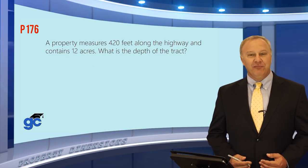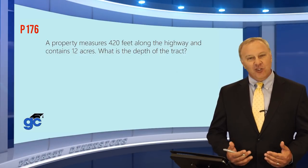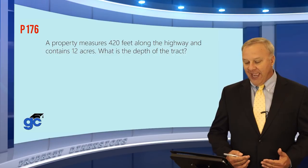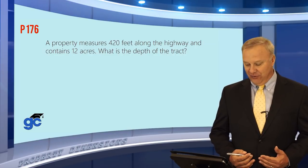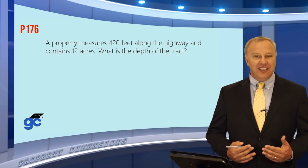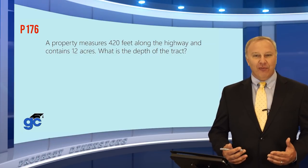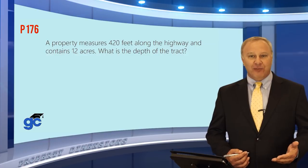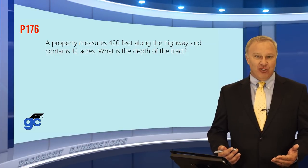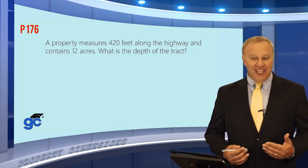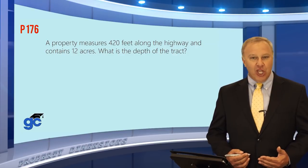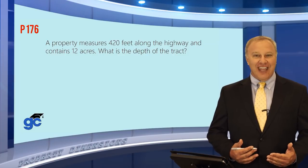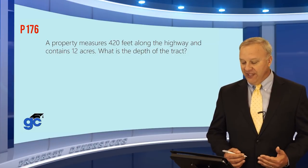Moving to the next question dealing with dimensions: a property measures 420 feet along the highway and contains 12 acres. The question asks what is the depth of the tract. The formula for area is length times width (or depth times width), and we know the area is 12 acres and the front width is 420 feet. We need to find the depth.